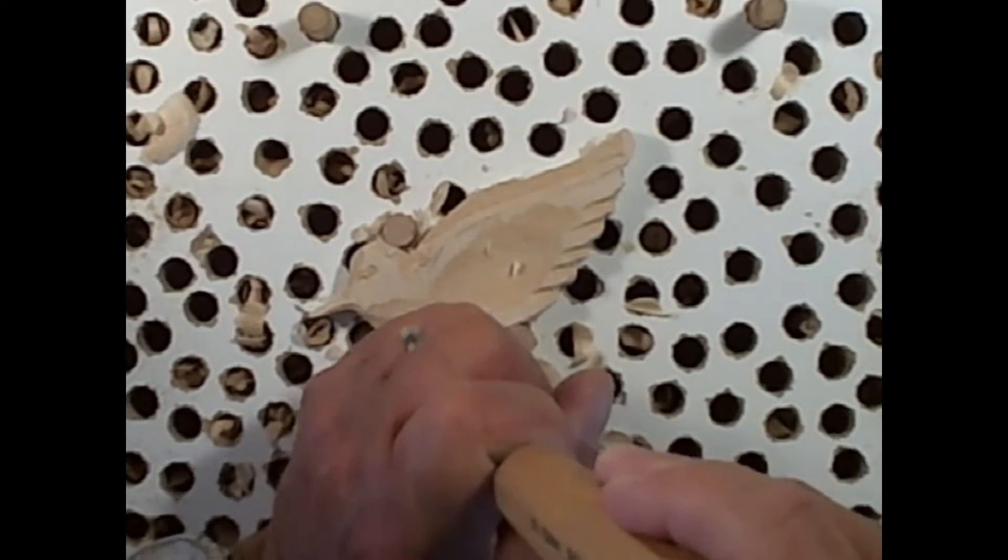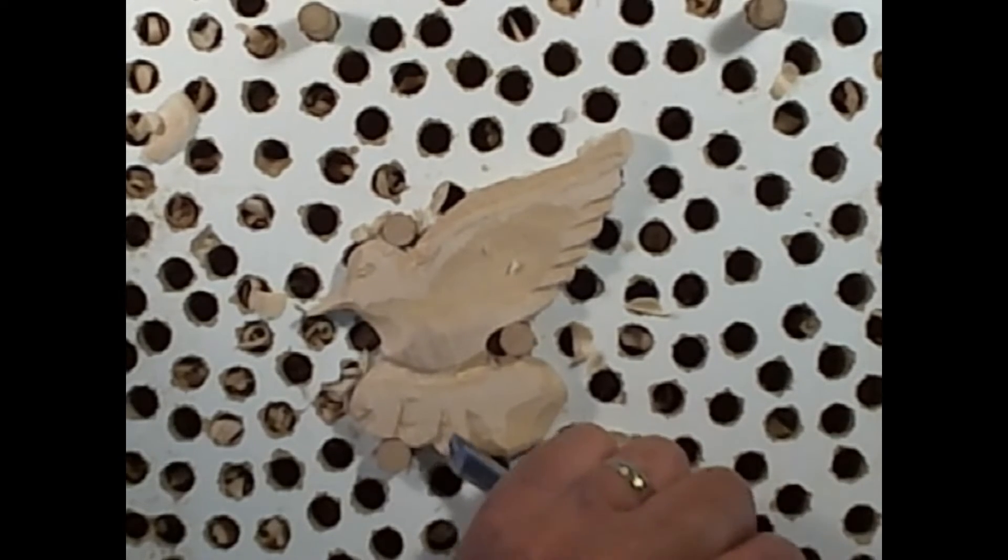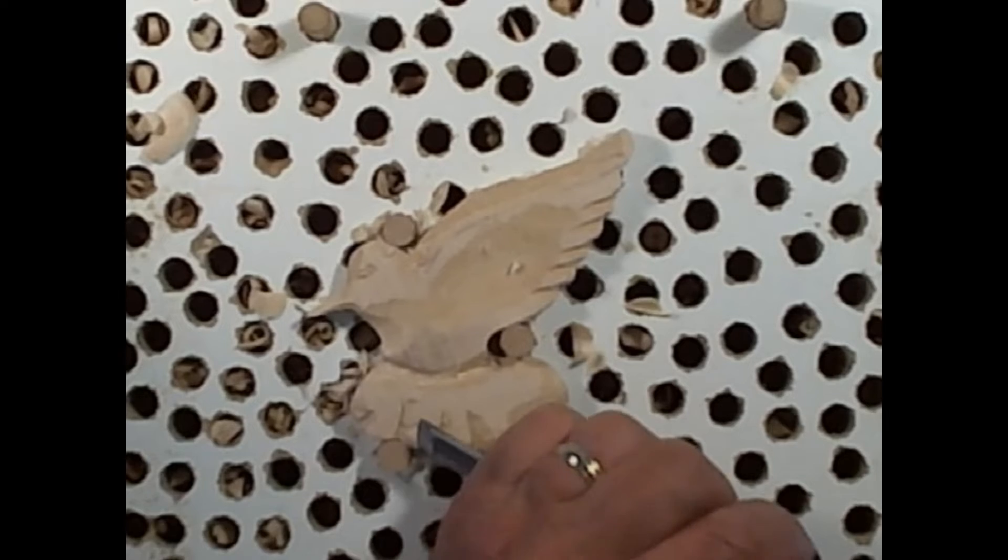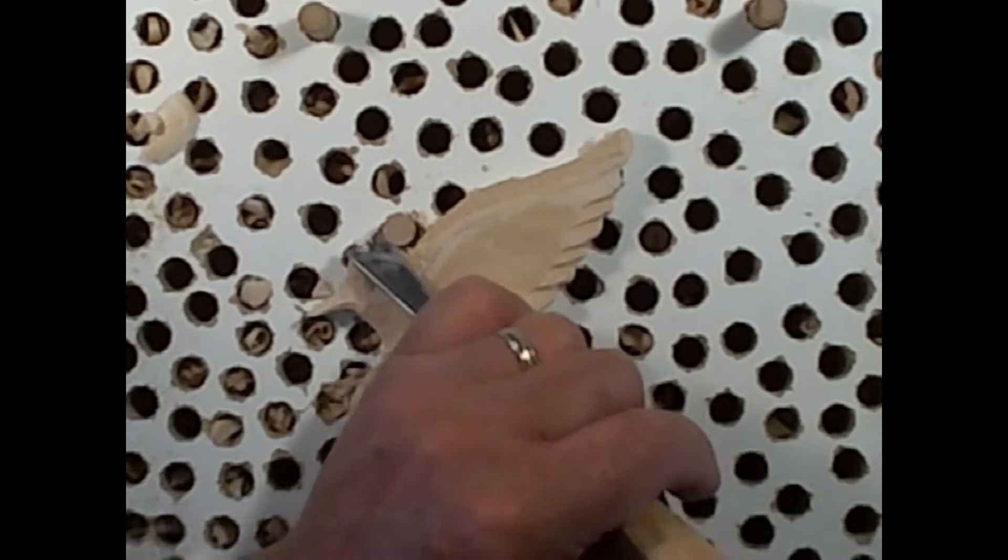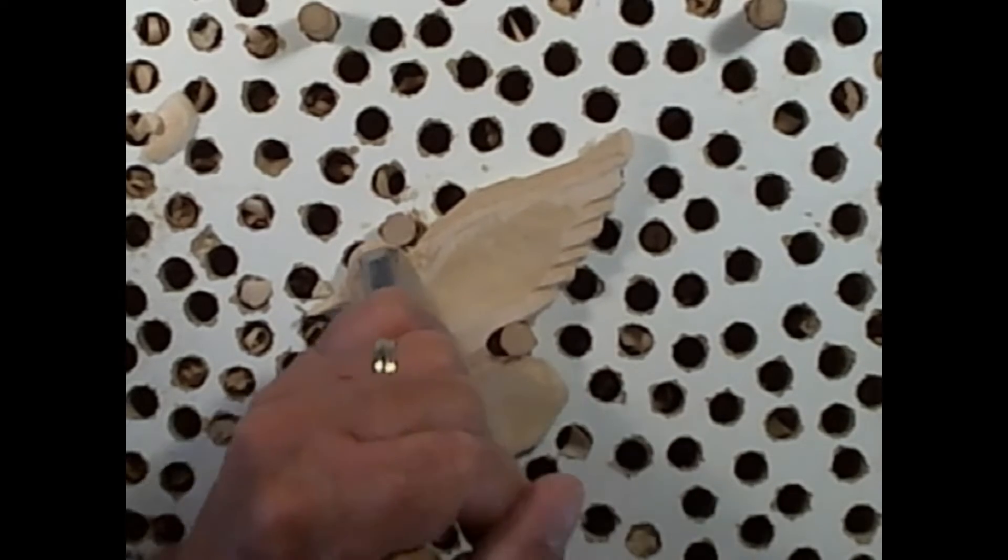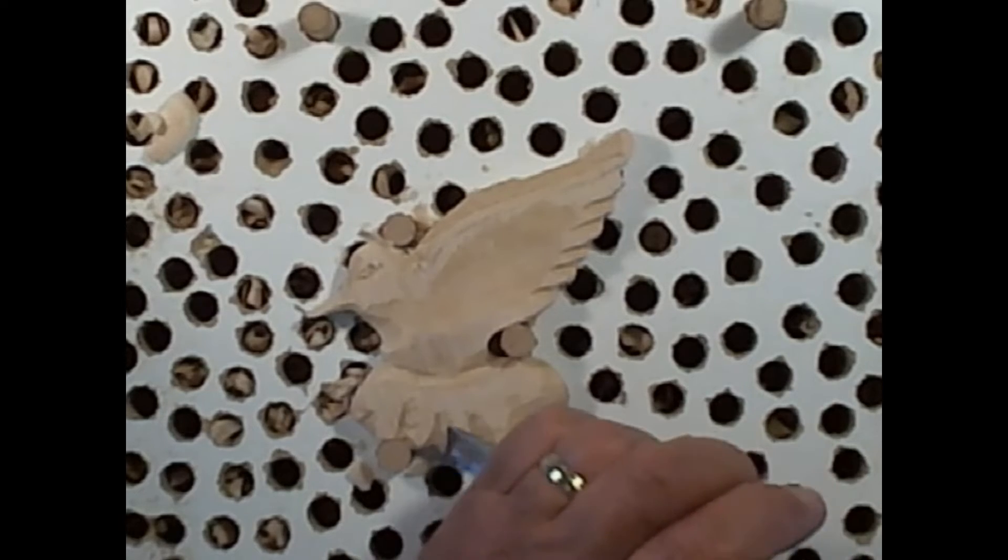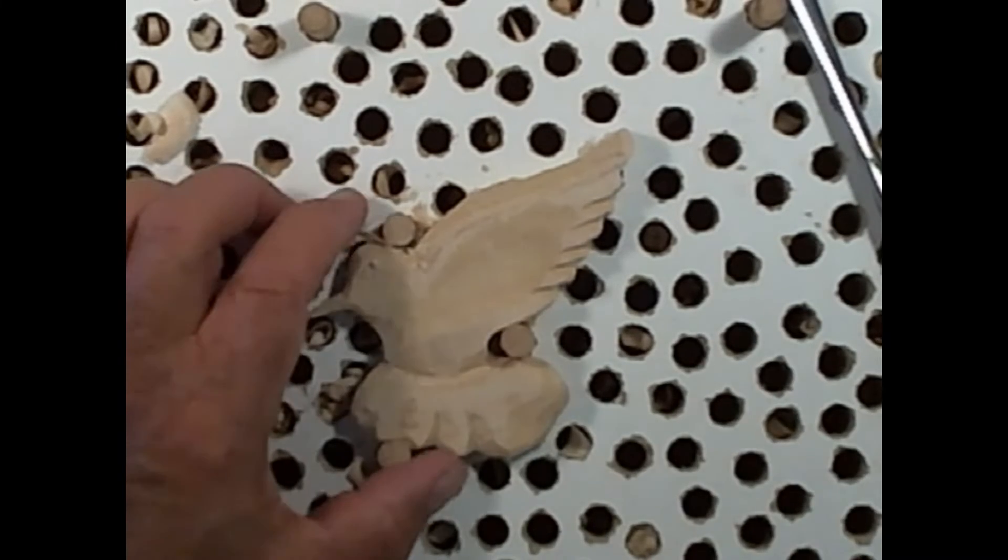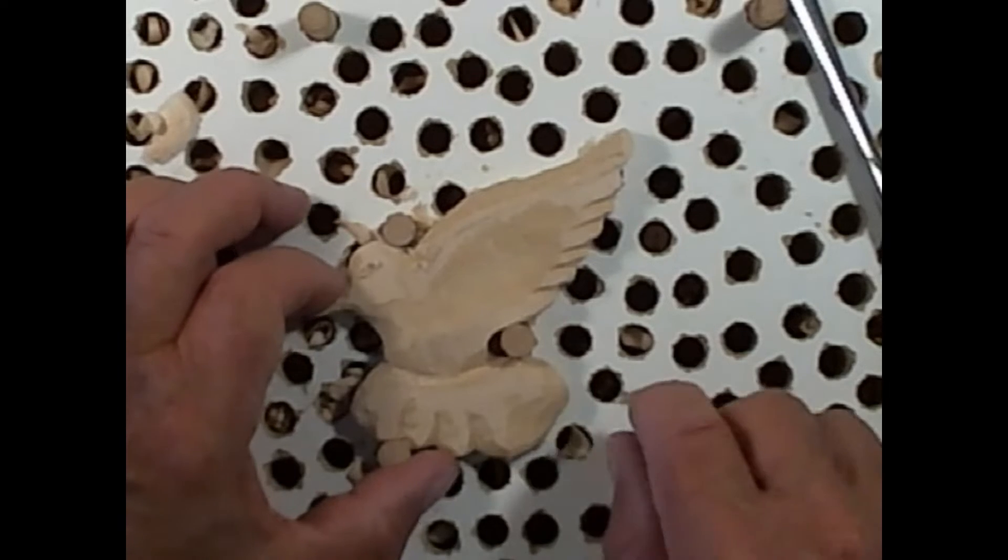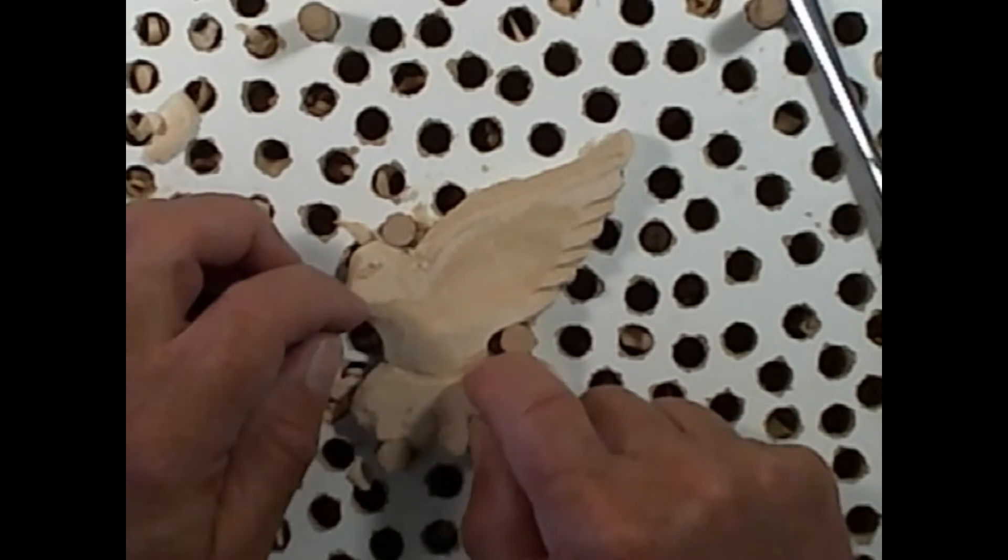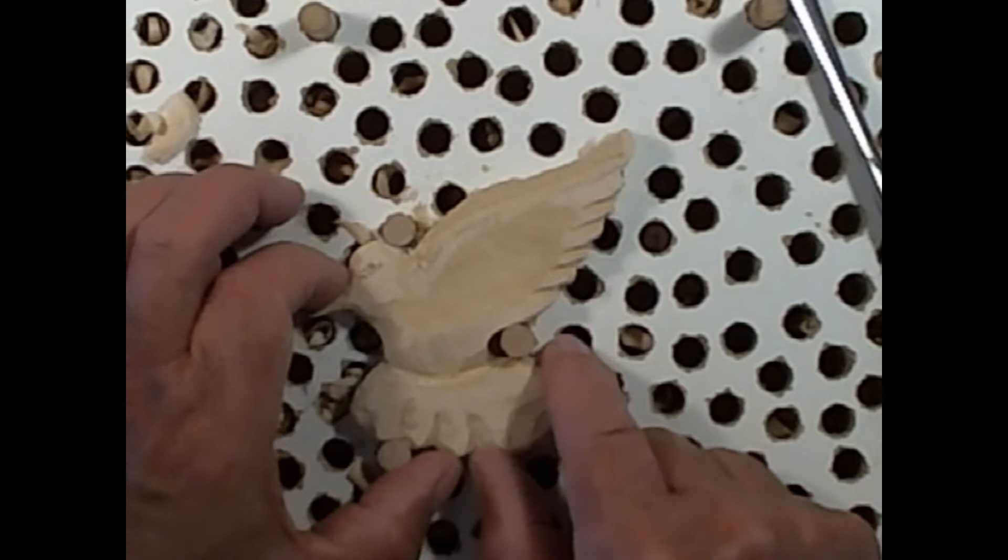Get these edges rolled down. I like to use these gouges upside down to do my rounding. Just a little bit smoothing off. Now the appliques are normally glued on. Sometimes in an inconspicuous spot, I will drill very small holes to put a little brad in there to hold it.